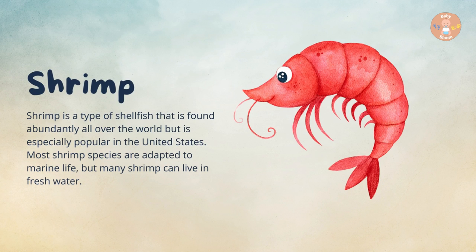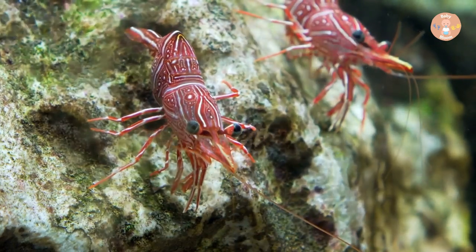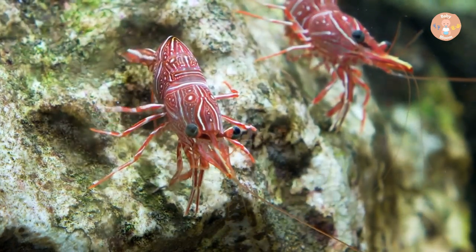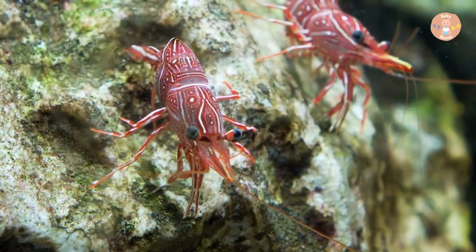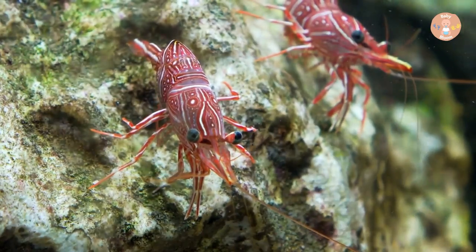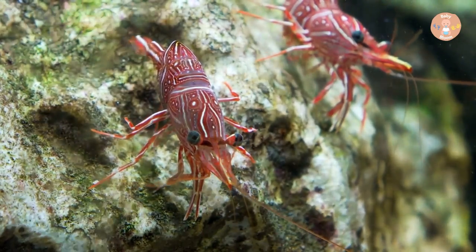Shrimp. Shrimp is a type of shellfish that is found abundantly all over the world but is especially popular in the United States. Most shrimp species are adapted to marine life, but many shrimp can live in freshwater.